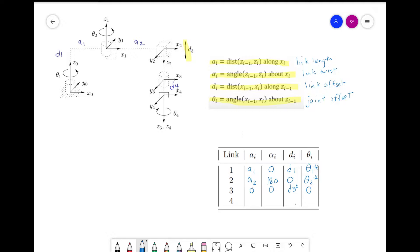For link four, the distance from z_3 to z_4 is zero. For alpha, we see that the axes have the same orientation, so alpha is zero. For d_i, the distance from x_3 to x_4 along z_3 is d_4.